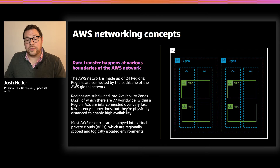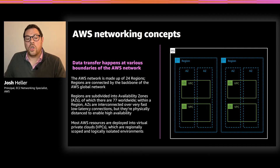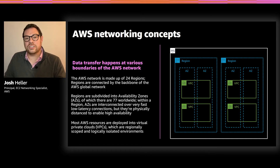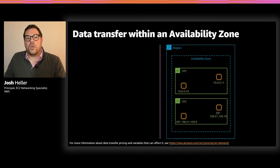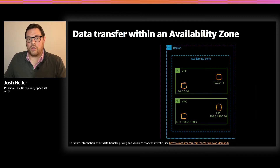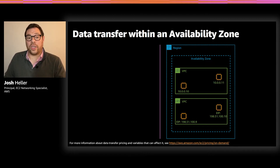Now that we've learned about the building blocks that control where data transfer happens, we'll look at some examples of how data transfer occurs when workloads are deployed on AWS. We'll start at the bottom and work our way back up. We'll begin with data transfer behavior in a single availability zone. Here's the diagram we're going to work with — a single region and a single AZ within that region. We've deployed two VPCs in our example.